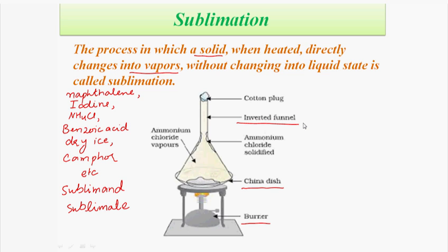The china dish is covered with an inverted funnel. The opening of the inverted funnel is closed with a cotton plug. The substance is heated using the burner. The pure solid gets deposited on the inner side of the funnel — as we can see, the ammonium chloride has solidified there. When the whole substance is removed, we stop heating, and we can get our pure crystals by scratching them from the funnel.